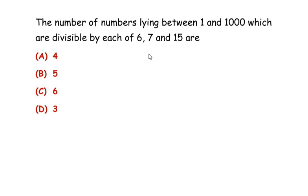We have to find out the numbers ranging between one and one thousand — it could be four hundred, five hundred eighty, and so on — but these numbers should be divisible by all three numbers. We need to find out whether there are four, five, six, or three such numbers between one and one thousand.